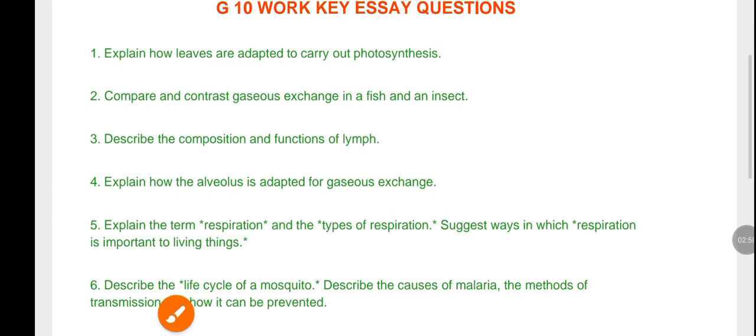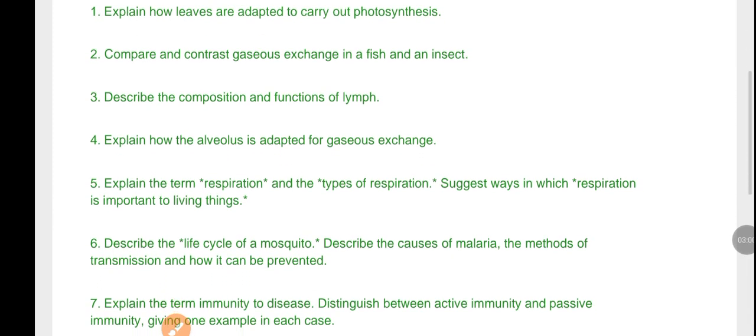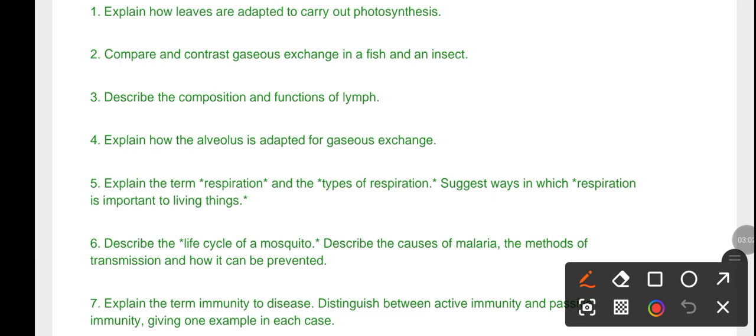Let me show you the last one which is also very, very important. This essay, as you can see, go and check in most of the question papers, you are going to find that they almost ask this question. Explain the term immunity to disease, distinguish between active and passive immunity, and we are supposed to give examples in each case.